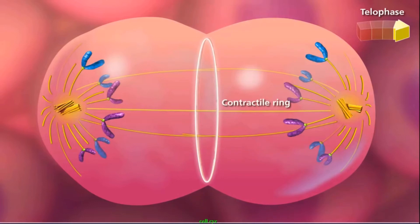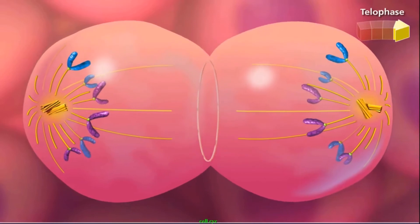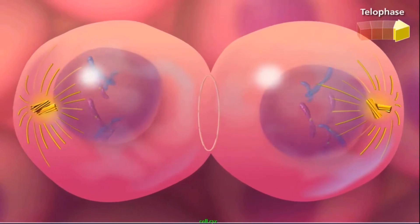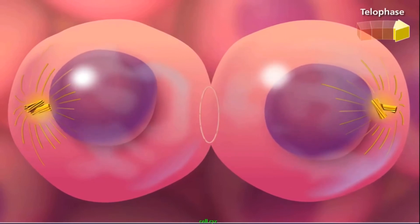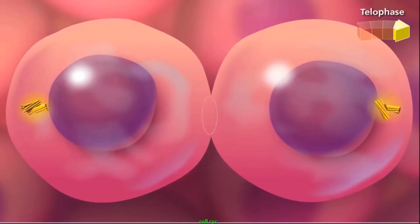Spindle fibers disintegrate, nucleoli also reappear, and chromatin fibers of chromosomes uncoil and become invisible again.